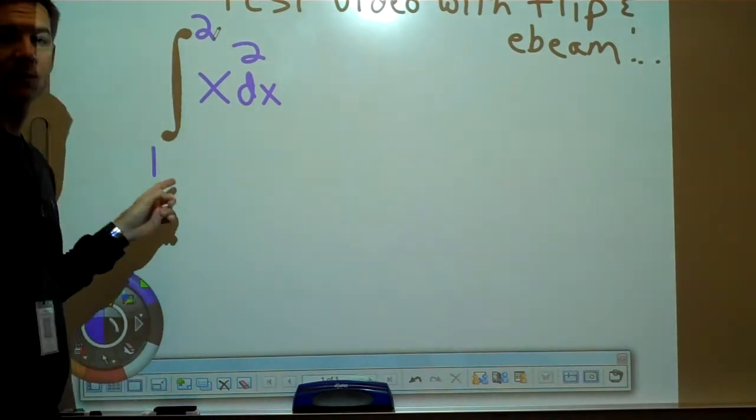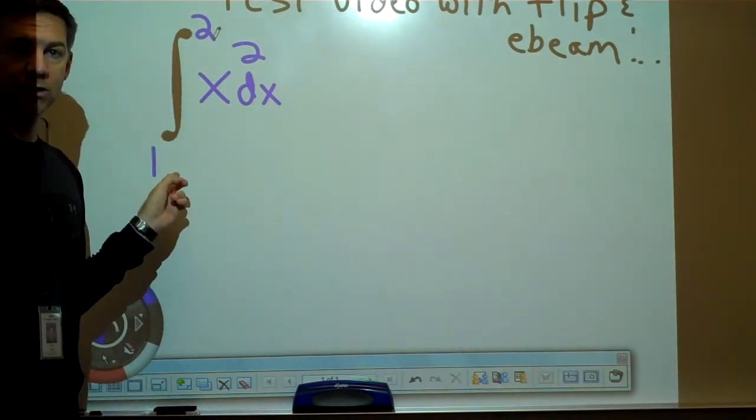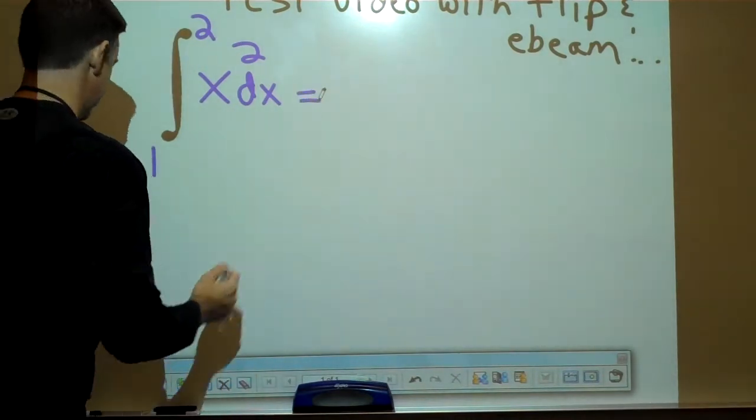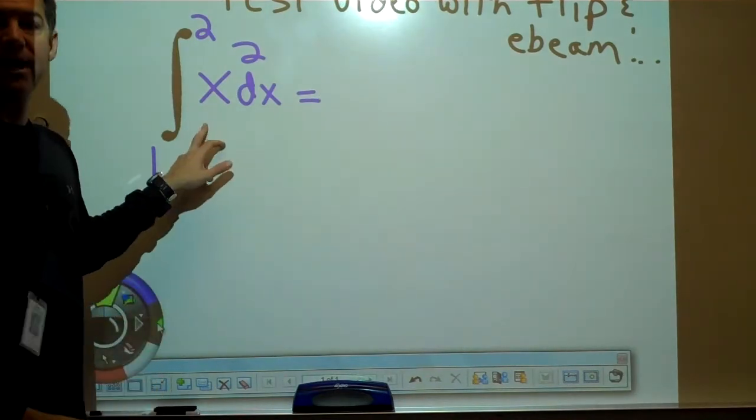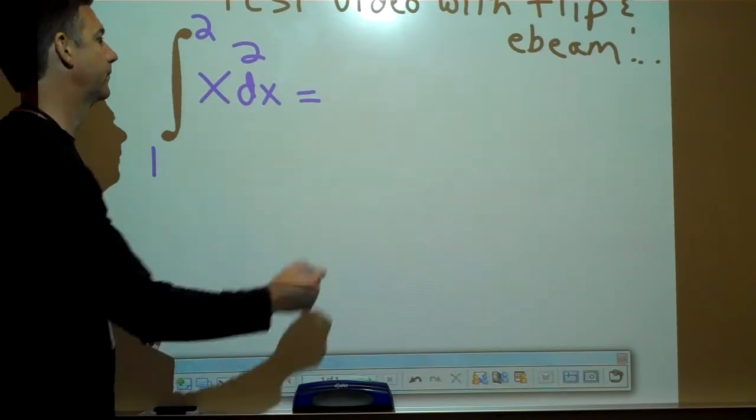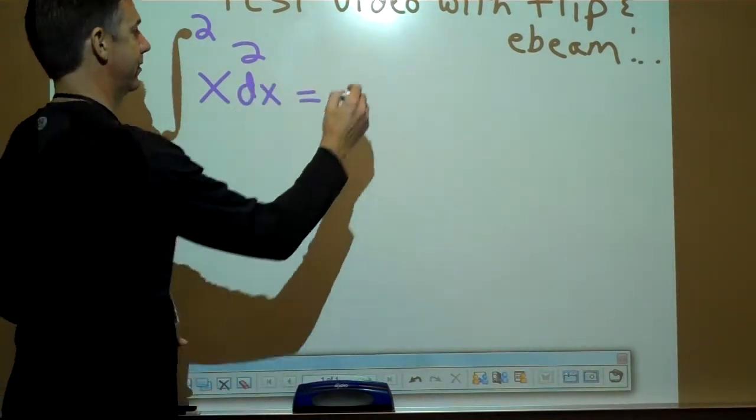So I'm trying to evaluate the integral from 1 to 2 of the function x squared dx. The way this works is you have to first figure out the antiderivative of x squared. So that's x cubed divided by 3.